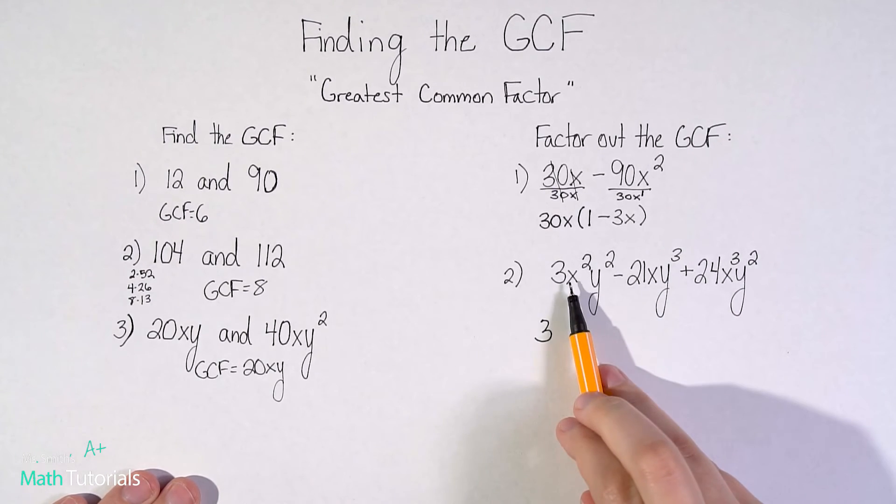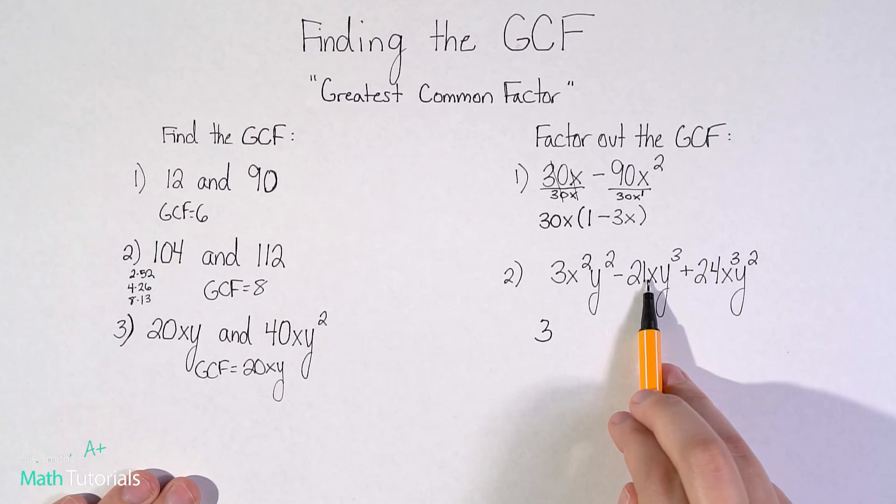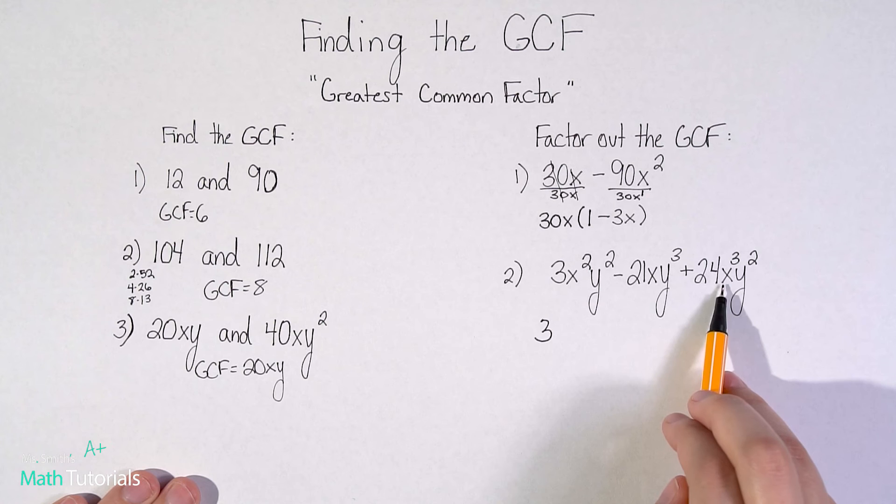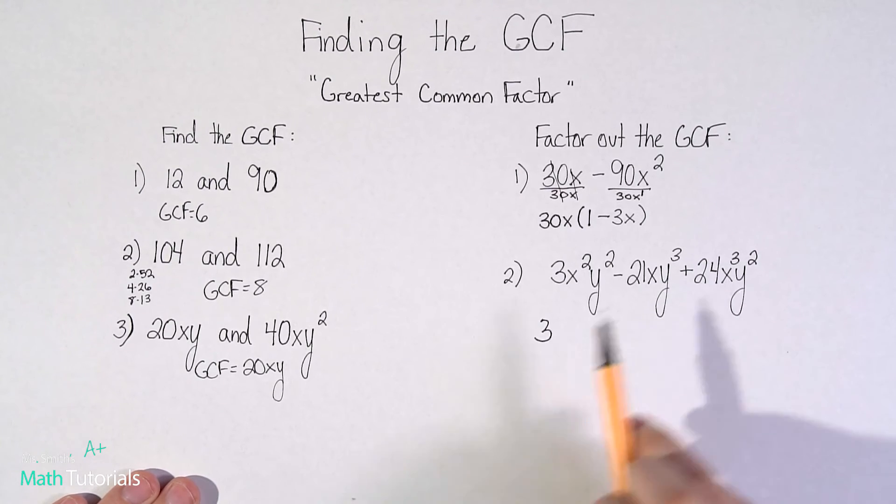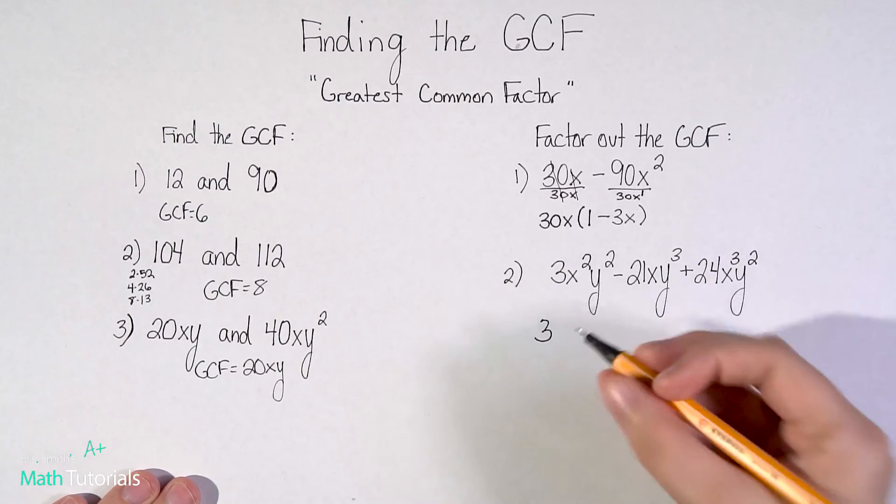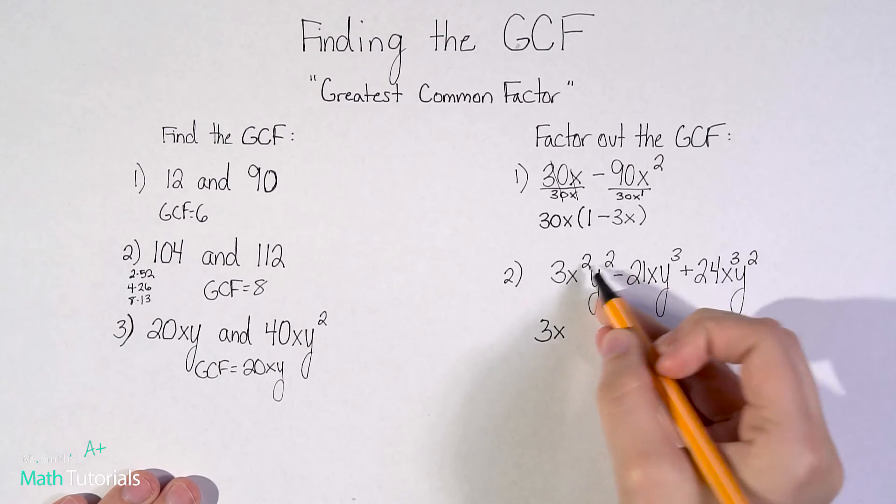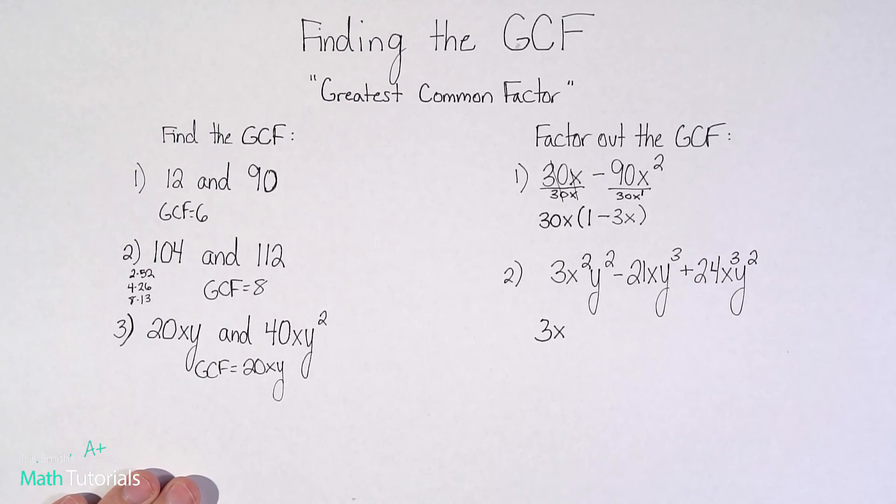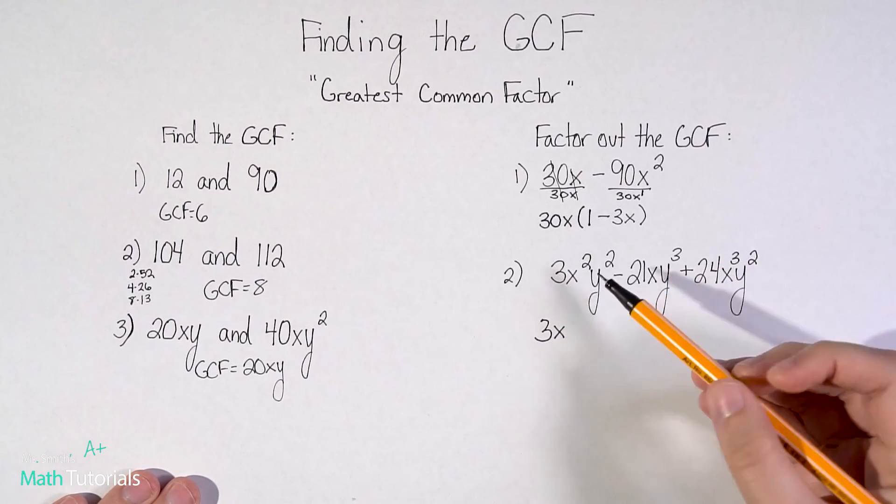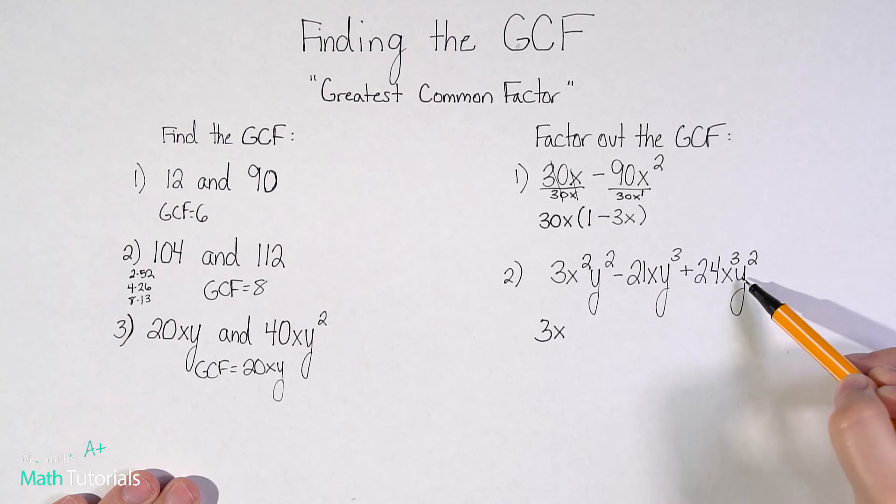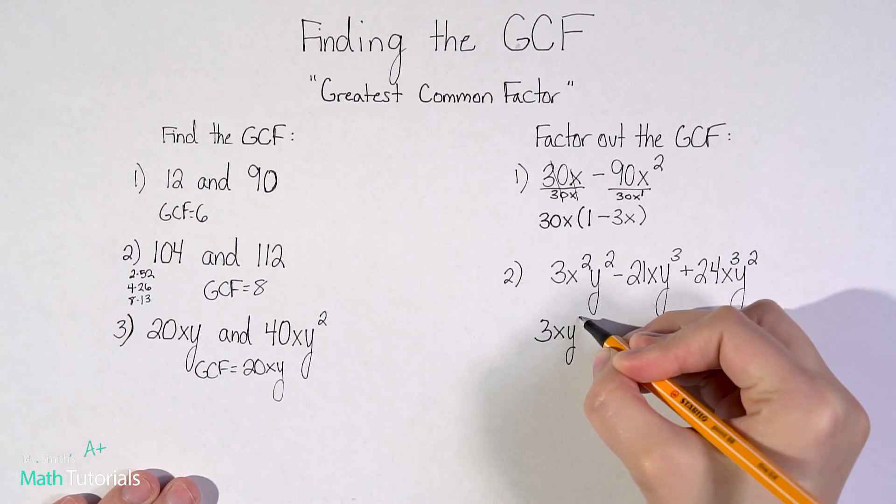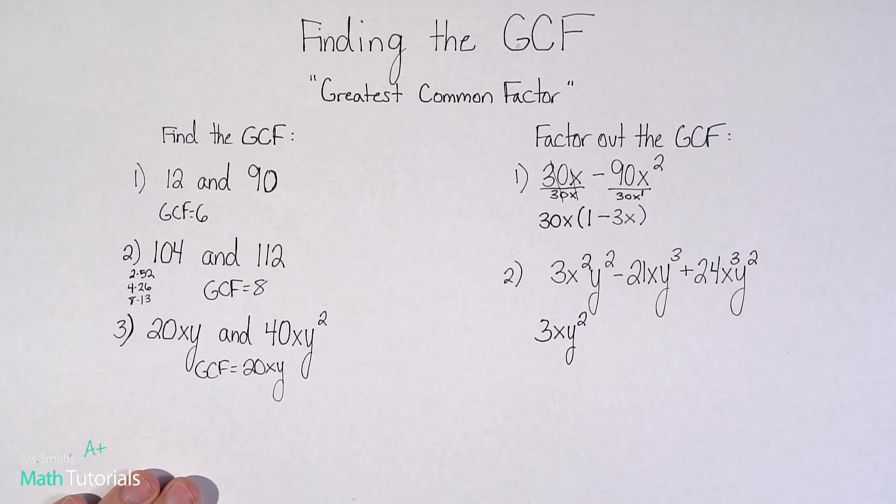Now let's look at the x's. This one has x squared. This one just has one x. And this one has three x's. So what is the most all of them can give me, but it has to be the same one being pulled out of each? Well, that one only has one to give. So all I can pull out is one. Even though that one has two and that one has three, this one only has one to give. That's the most we can pull out. What about our y's? So I've got y squared, y cubed, and y to the second. So the most this one could give me would be two. The most this one could give me would be two. The most that one could give me would be three, but it has to be the same number being pulled out of each. So the most I can take out is two.